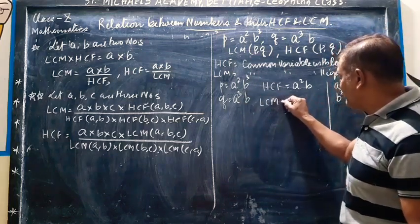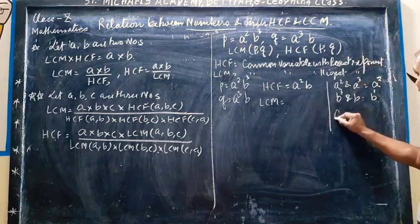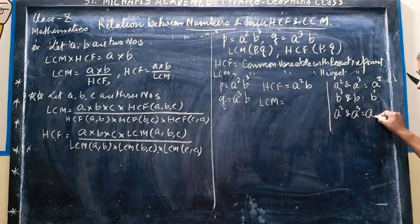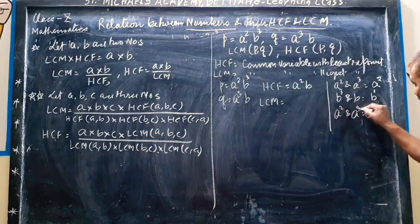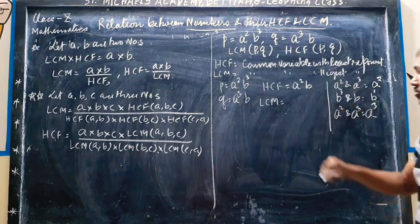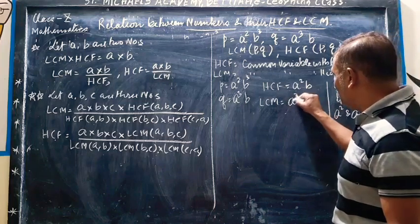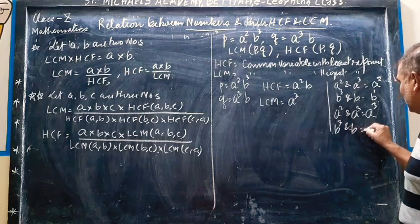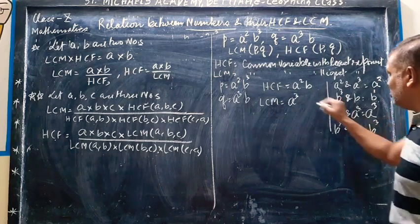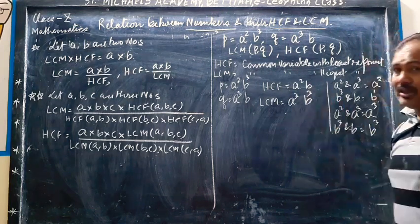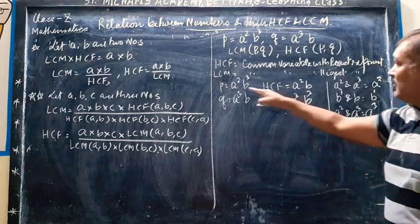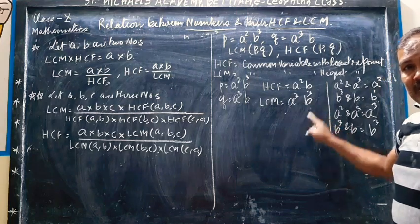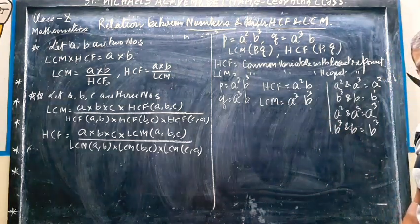Now, LCM. A square and A cube. Common variable is A and the highest exponent in A square A cube is A cube. So here I have A cube. And in B cube and B, the highest exponent is B cube. So the LCM of A square B cube and A cube B is A cube B cube. This is clear. Very easy to explain.